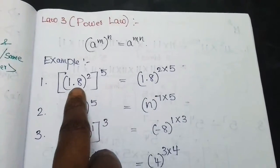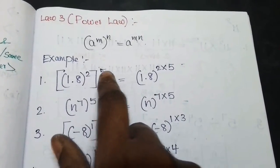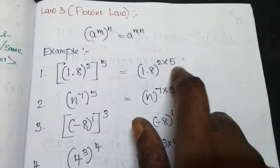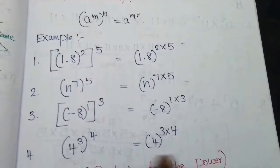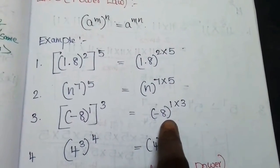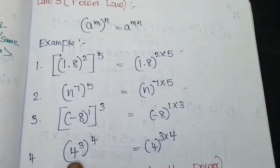For example, this number is power to the power. So, power to the power — we multiply. For all four examples, we have to multiply. Base stays as it is; we have to multiply the powers.